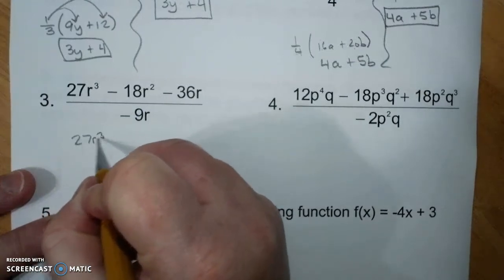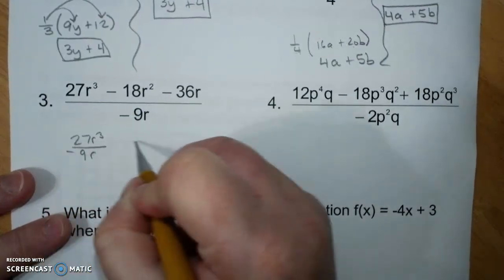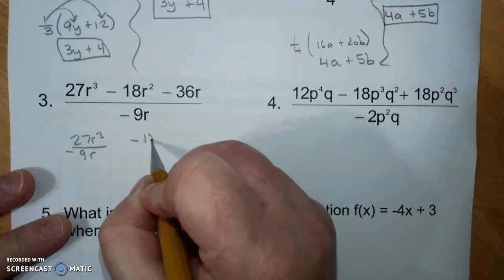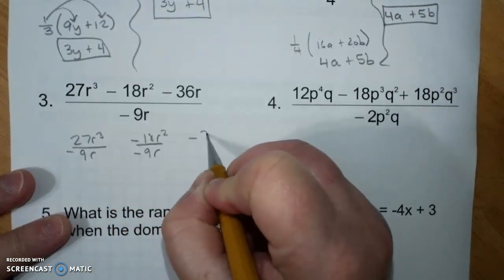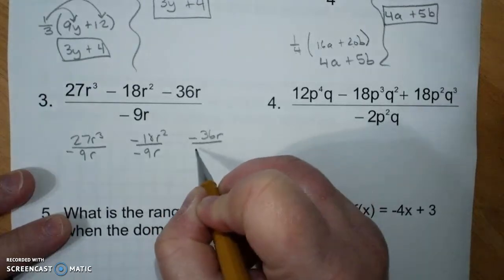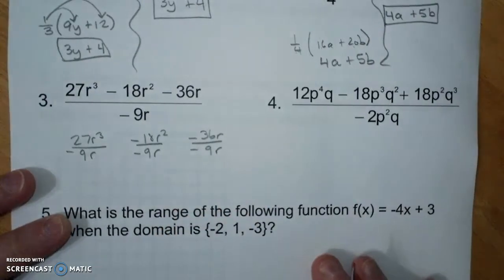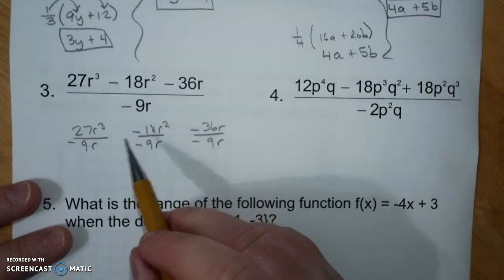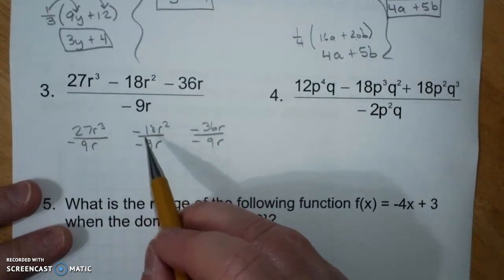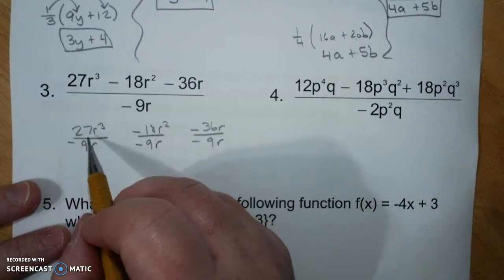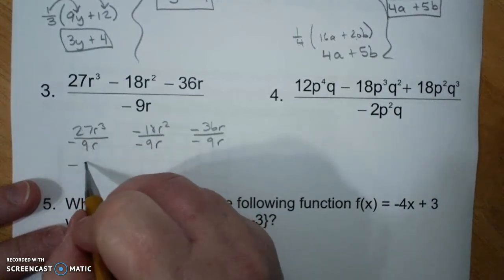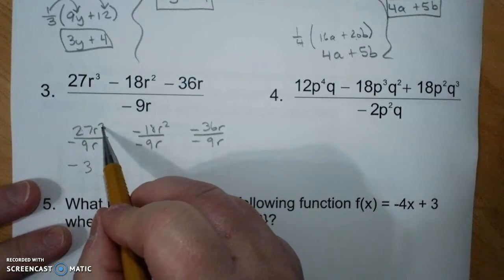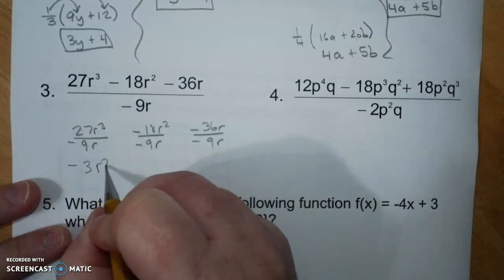So 27r cubed over negative 9r, negative 18r squared over negative 9r, negative 36r over negative 9r. And I do it this way because I match up. So, positive and a negative, negative. 27 divided by 9, 3. Three of them up there, one of them down there, leaves 2.